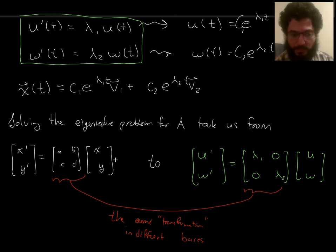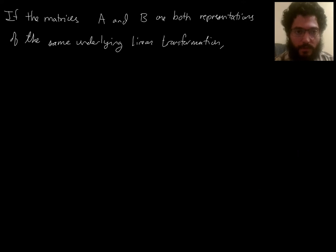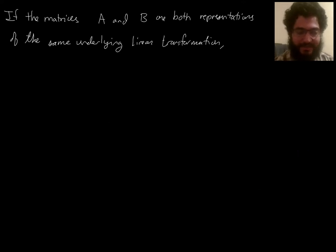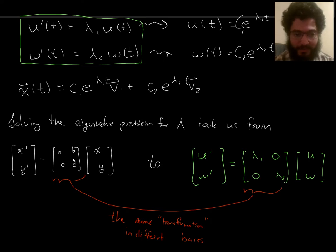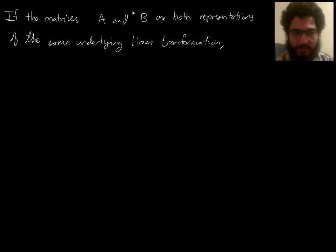A change of variables relates how to go between x and y and u and w. Now I want to use this fact — that we can use the eigenbasis for a matrix — to come up with another matrix that represents the same underlying linear transformation.